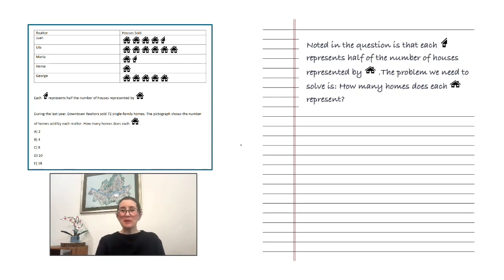Here's our first problem. During the last year, downtown realtors sold 72 single-family homes. The pictograph shows the number of homes sold by each realtor. Noted in the question is that each half icon represents half of the number of houses represented by the full icon. The problem we need to solve is how many homes does each icon represent? In order to do this, we need to add up all of the icons for each of the realtors.